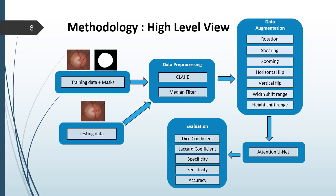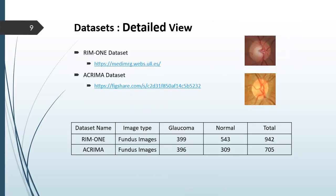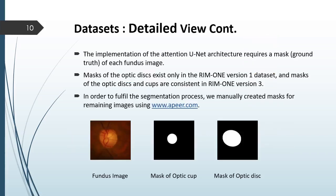Then, we feed all augmented images into the attention U-Net and evaluate the Dice coefficient, Jaccard coefficient, accuracy, specificity and sensitivity. For this experiment, we used two different datasets: RIM-1 and ACRIMA. RIM-1 includes a total of 942 images and ACRIMA includes 700 images. The implementation of the attention U-Net architecture requires masks for each fundus image. However, masks of the optic disc exist only in RIM-1 version 1, and masks of the optic disc and cup are present in RIM-1 version 3. To fulfill the segmentation process, we manually created masks for the remaining images. These are samples of fundus images along with masks of the optic cup and optic disc.